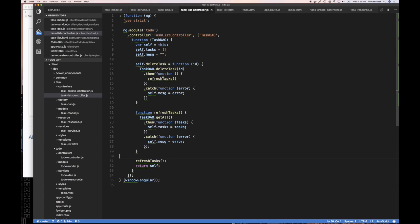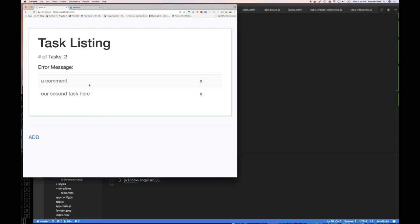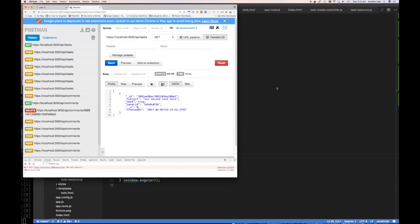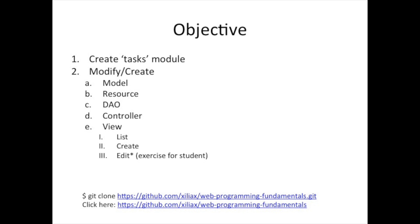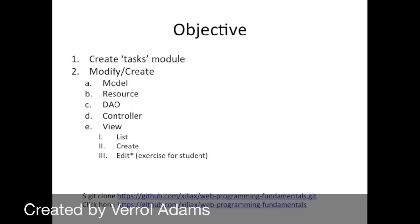Now if we click delete, notice how it removes the task from the list. Going to Postman and refreshing, you can see it's gone. We have our front end successfully tied up to our back end — end-to-end communication from our view all the way to the backend. In the next video we'll create our task form and use it to post data to the backend. Thanks for watching, see you in the next video.